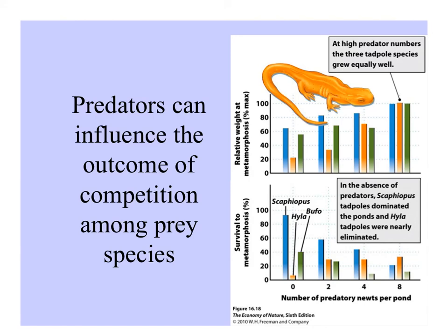Paine found that prey species — barnacles — grew but their diversity decreased when sea stars were excluded, because sea star predation normally limits the superior competitors like barnacles and mussels, allowing less competitive species to survive and increasing habitat diversity. A similar outcome was seen in a tadpole experiment: under intense predation, three tadpole species grew equally well, as shown by weight at metamorphosis. But when predators were removed, one species outcompeted the others and one was nearly eliminated.